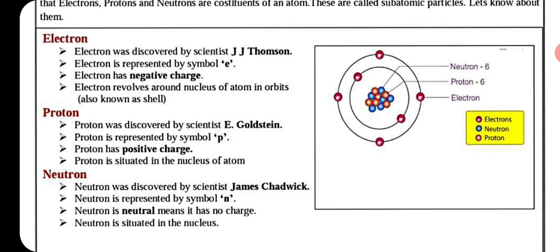Proton was discovered by scientist E. Goldstein. Proton is represented by symbol P. Proton has positive charge. Proton is situated in the nucleus of the atom. Proton में positive charge होता है, उतना ही जितना electron में negative charge होता है — दोनों का charge same होता है, but opposite होते हैं। Proton पाए जाते हैं nucleus में, जैसा आप right side देख सकते हैं।